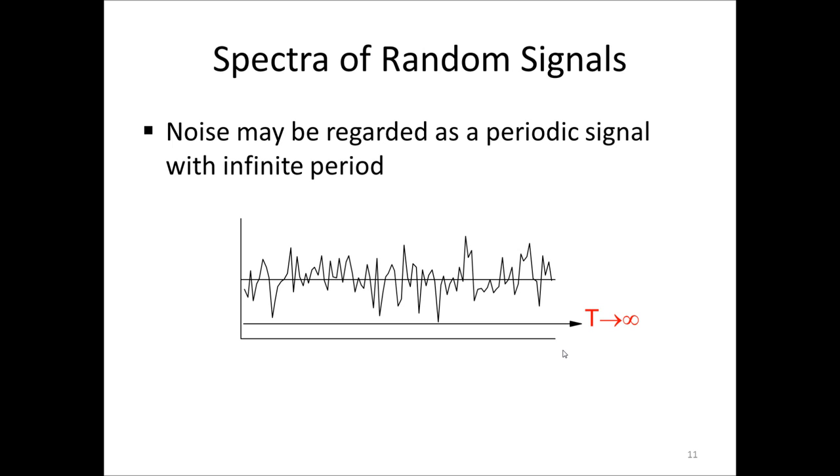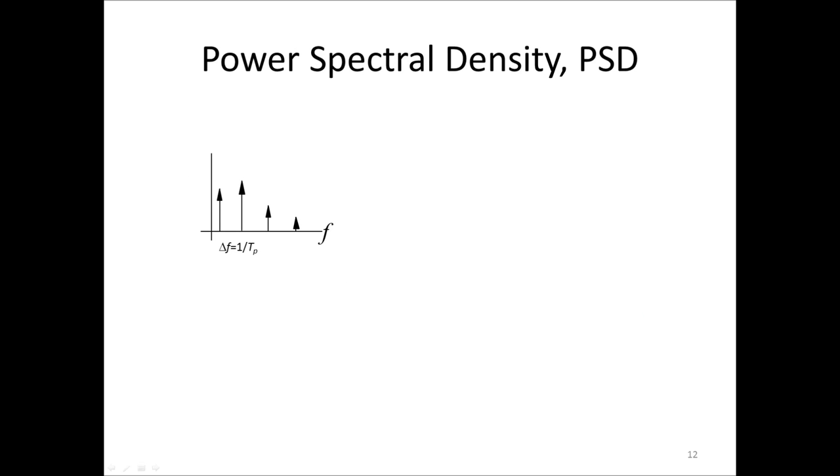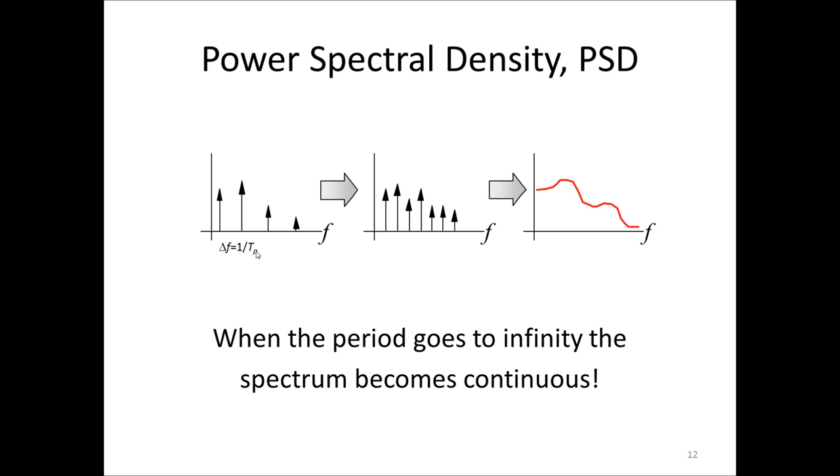That means that we never encounter the second period of the signal. We know that the distance between two frequencies is a delta frequency of one over the period of the signal. When the period increases, the frequency components come closer and closer together. And in the limit, when the period becomes infinite, the spectrum becomes continuous.